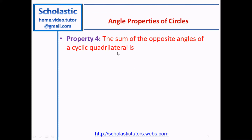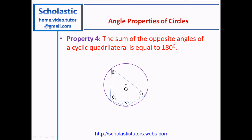Property 4: the sum of the opposite angles of a cyclic quadrilateral is equal to 180 degrees. A cyclic quadrilateral is a quadrilateral whose vertices all lie on a circle. In this case, the opposite angles θ + γ = 180° and δ + α = 180°. You can draw this quadrilateral any way you like, but as long as the vertices lie on the circle, opposite angles will always sum to 180 degrees.